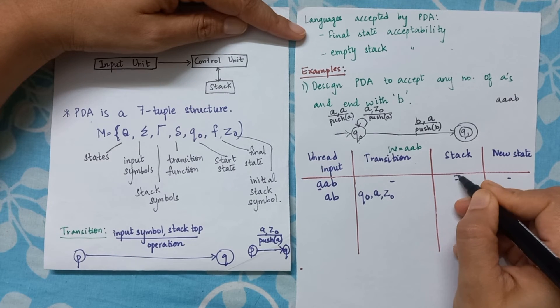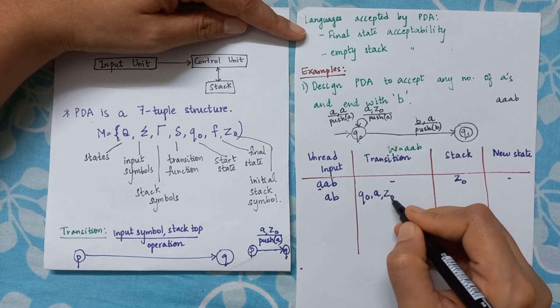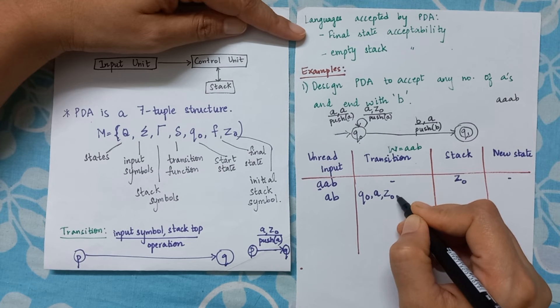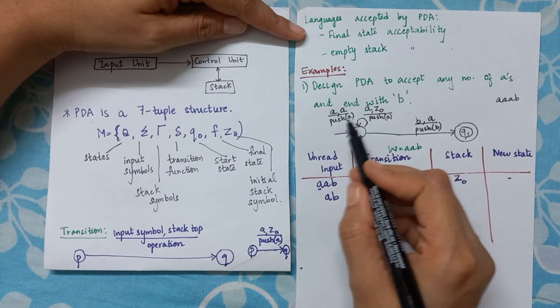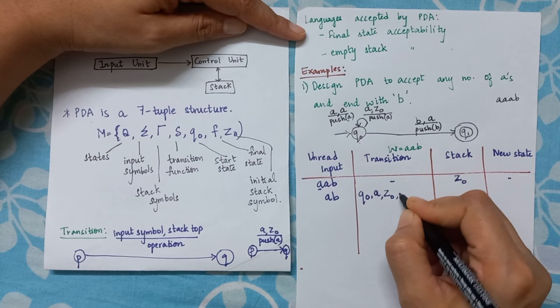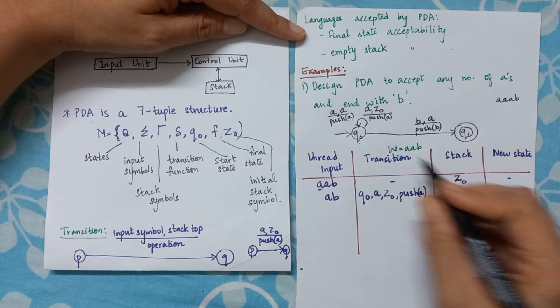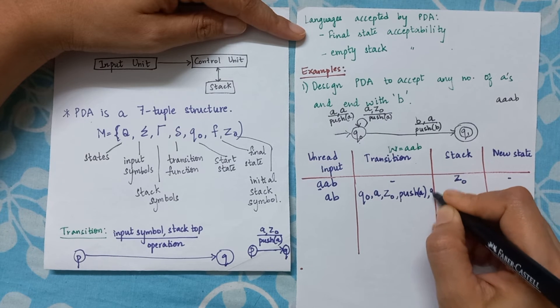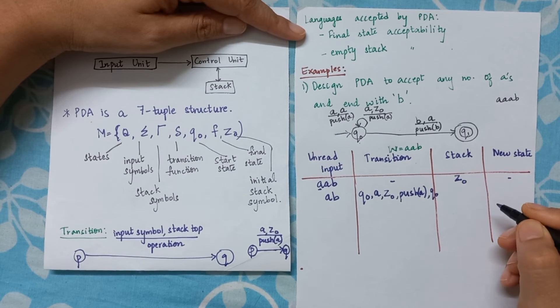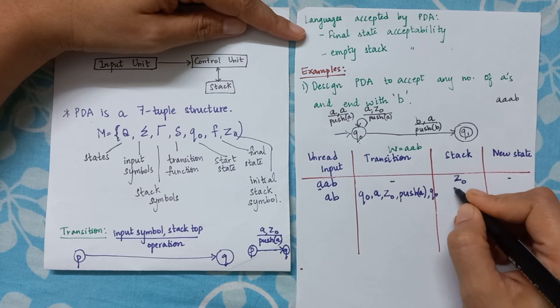That is, stack will definitely have a Z0. So here also I can put Z0. Then after that, what operation am I doing? I am pushing 'a' onto the stack. What will be my resultant state? I still remain on q0. What will be in the stack? The stack will have this 'a' and Z0. Any new state? No.